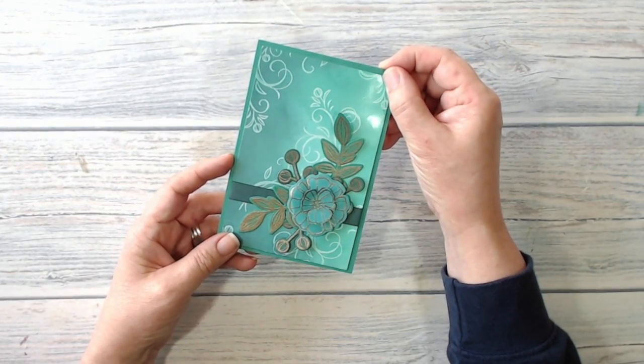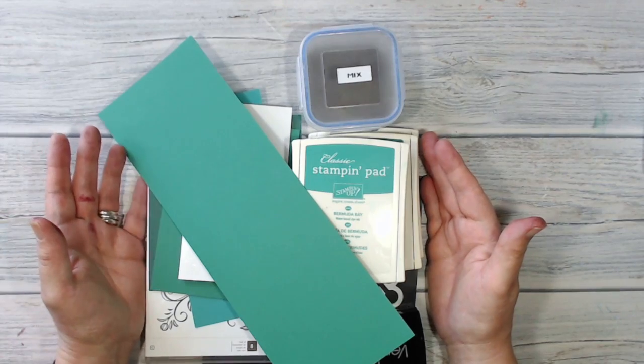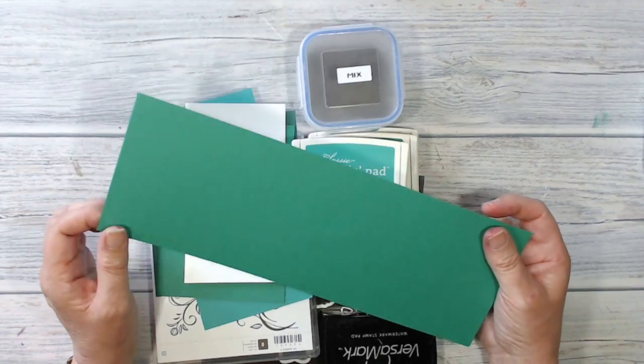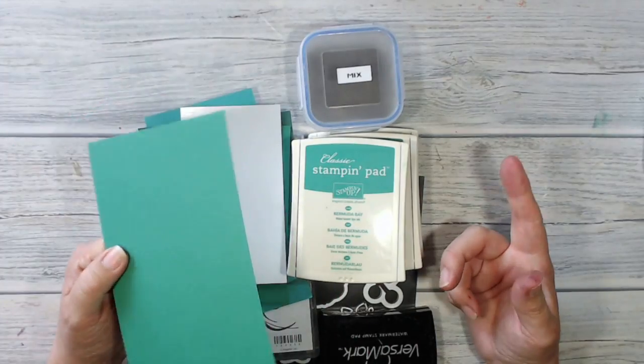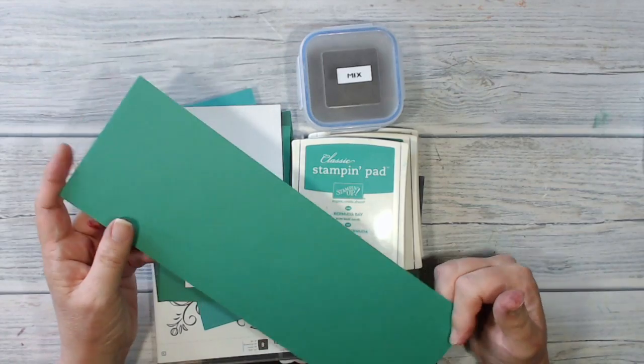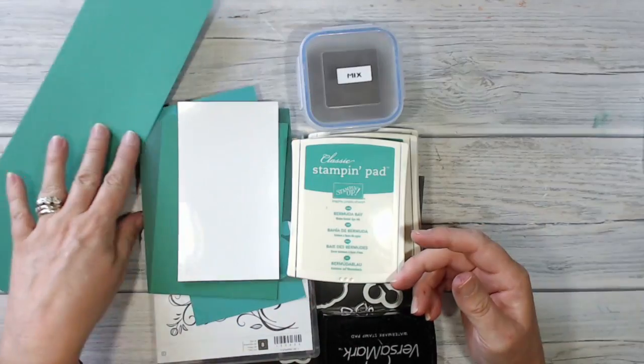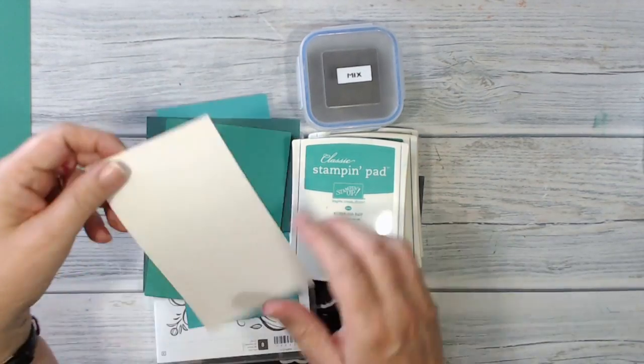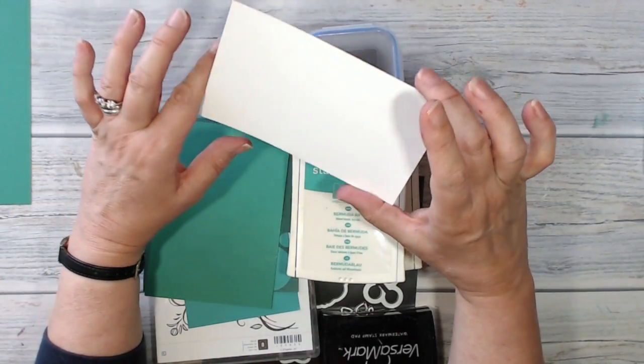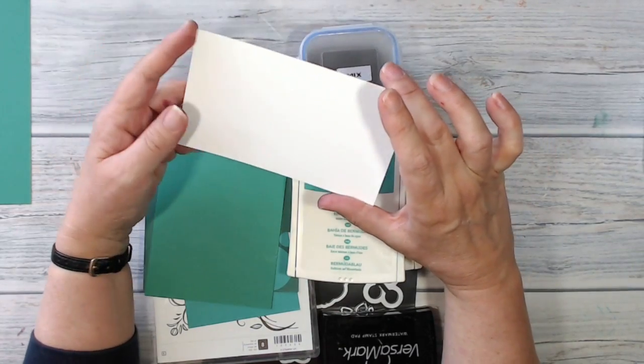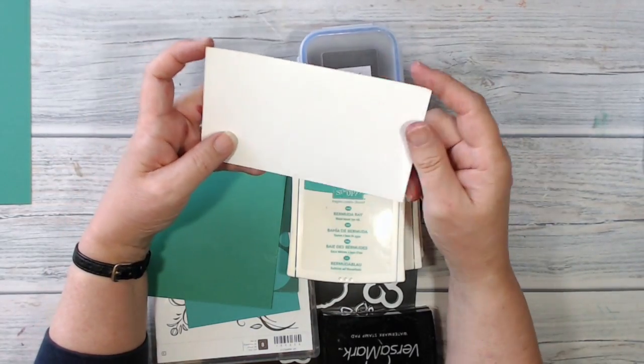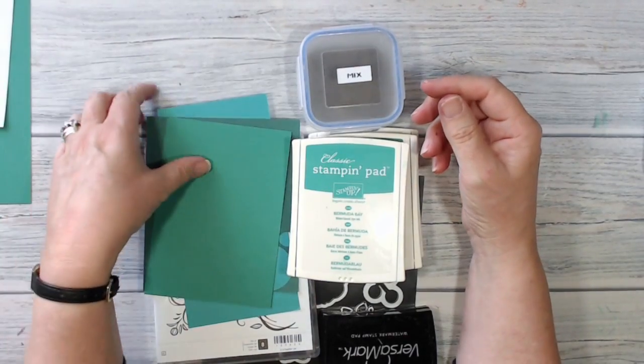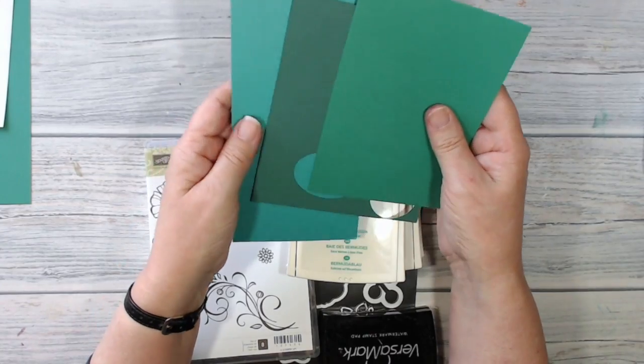These are the things that I'm using to make my card today. I have some emerald envy card cut to four inches by eleven and a half, and I'm going to score and fold it at five and three quarters to make my card front. I've got some glossy white card - the piece that I'm going to be using I've cut to a quarter of four. This is just a little sample to show you, and I've got some scraps of card for die cutting.